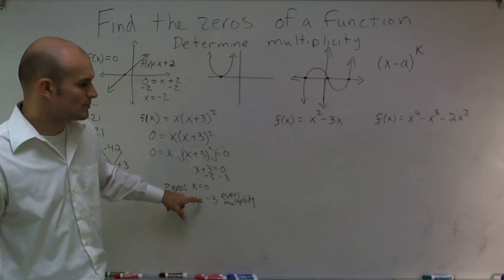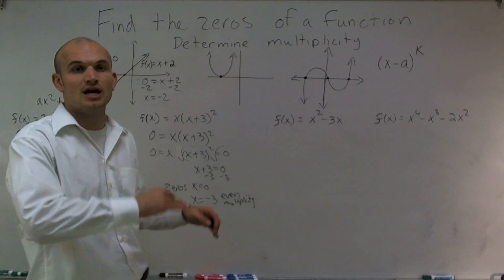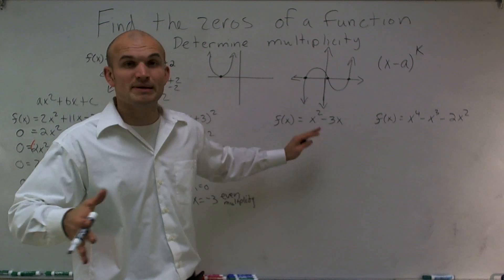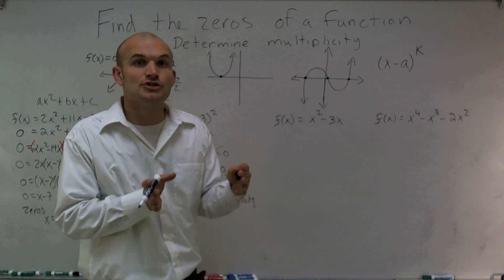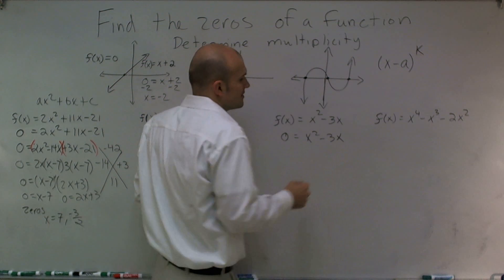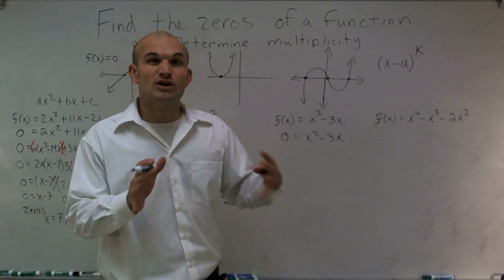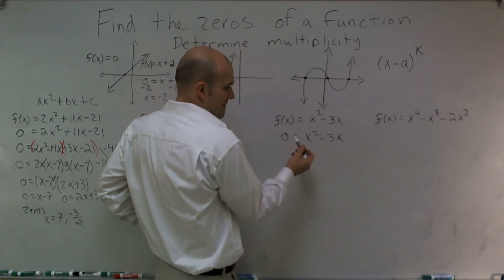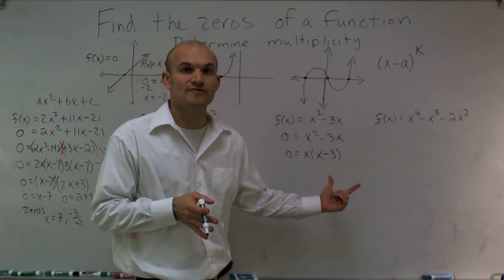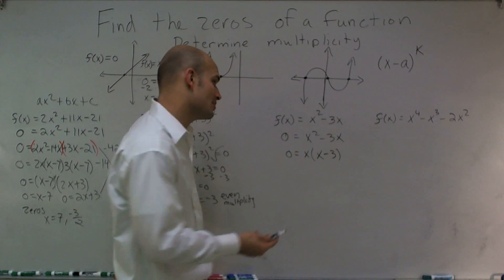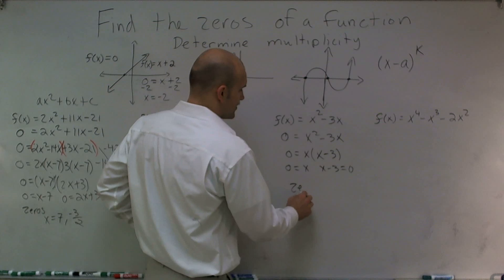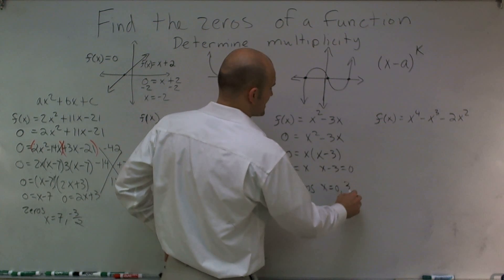What that tells me is when graphing this, my graph is not going to cross at negative 3 — rather, it's going to touch and then rebound. For this next problem, I can see there's an x squared. But before assuming even multiplicity, let's make sure we can set this as two factors multiplied. Setting f of x equals 0, I have x squared minus 3x. I can factor out an x, leaving me x times x minus 3. Now since I have two factors, these are both going to be odd multiplicity. Solving both for 0, my zeros are x equals 0 and x equals 3.